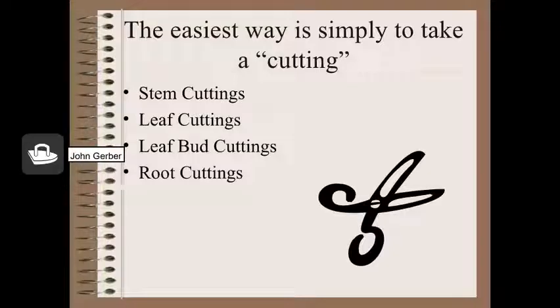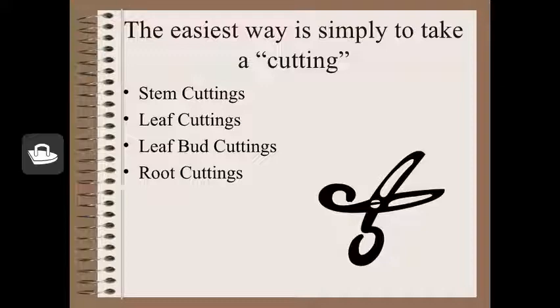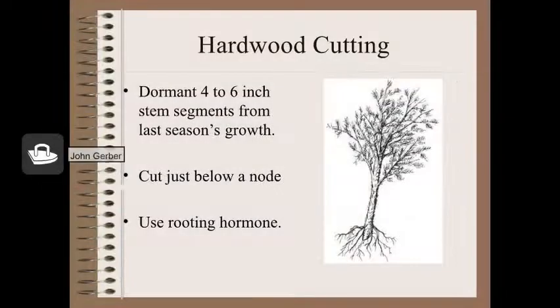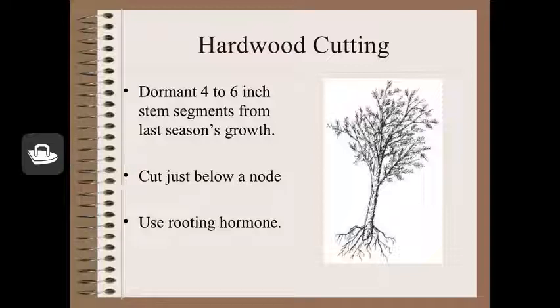Cuttings are classified as stem cuttings, leaf cuttings, leaf bud cuttings, and in some cases root cuttings. These are the easiest ways to produce new plants from old. Hardwood or tree cuttings are generally more difficult than soft leaf cuttings — softer tissue is easier to get rooted.